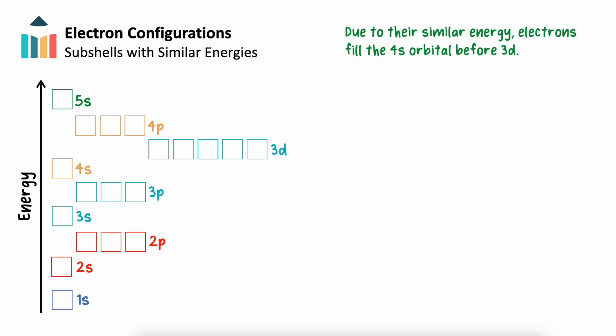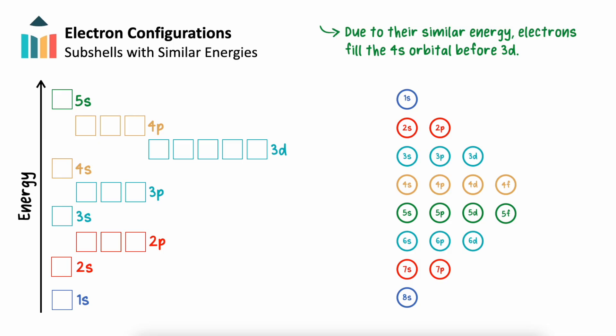Some subshells have similar energies despite being in different shells. Take for example 3d and 4s. Although the 4s orbital is in a further shell, it will usually fill before 3d. This is unusual to our typical pattern. To remember how electrons fill, we can draw a triangular version of our electron orbital diagram. By tracing diagonally through our diagram, we can track the filling order of an electron configuration.